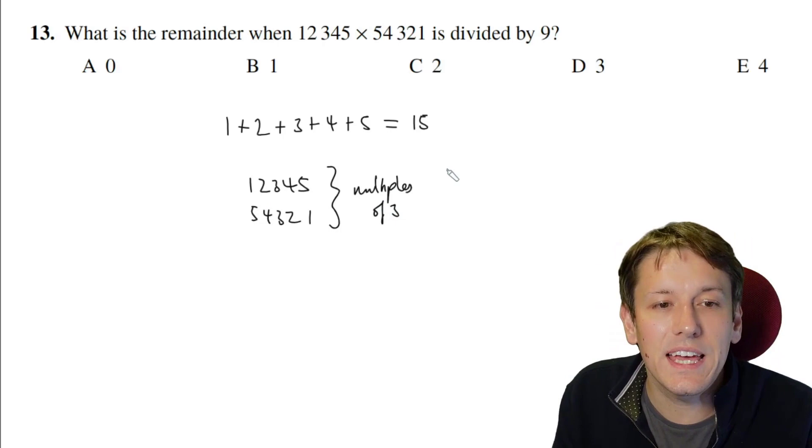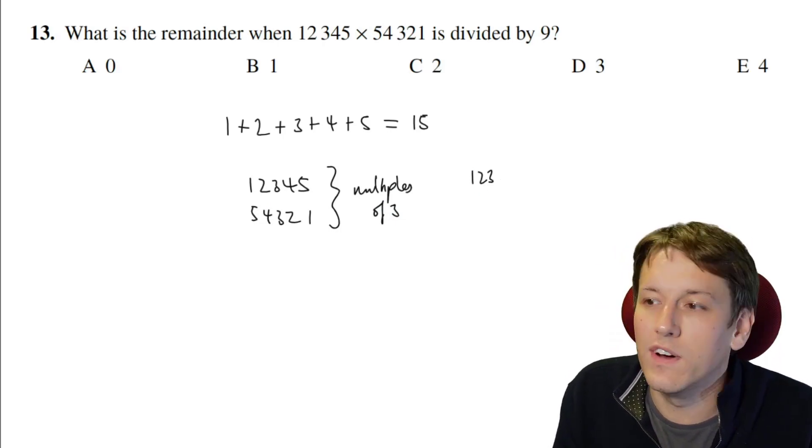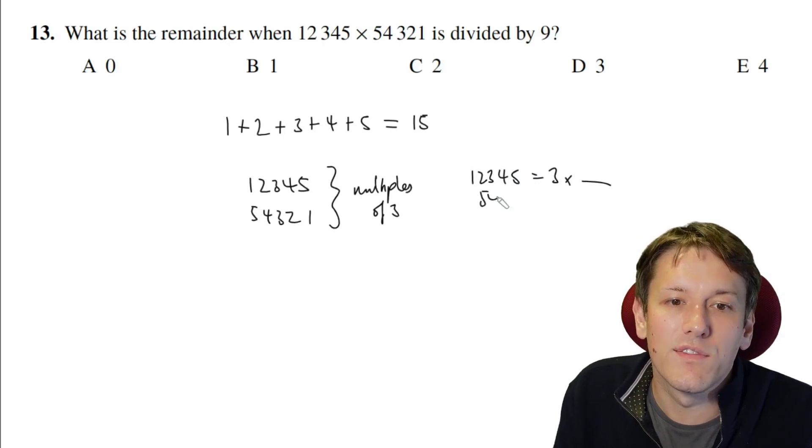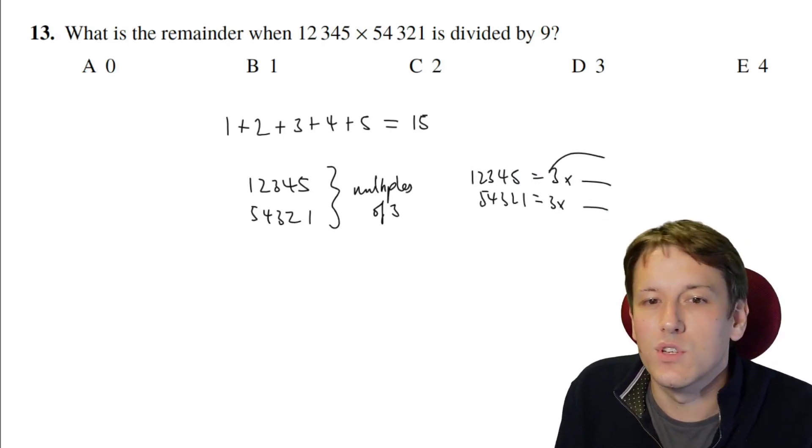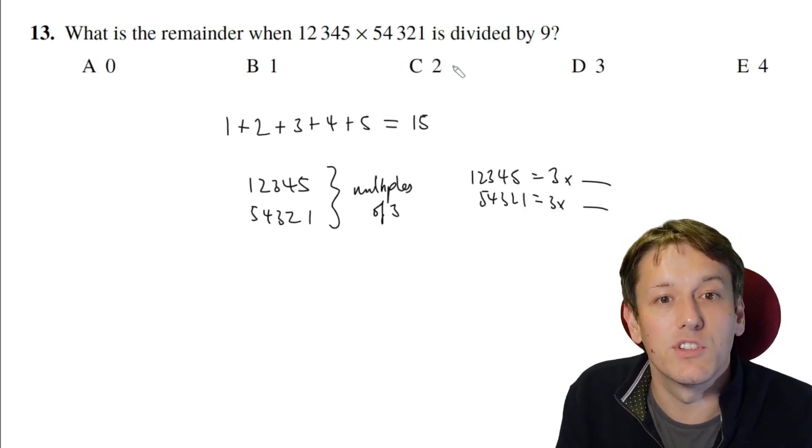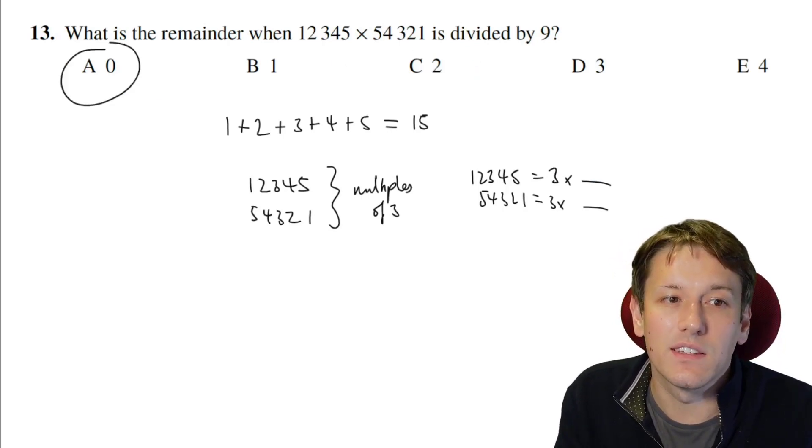So when I multiply them together, 12345 is going to be 3 times something, and 54321 is going to be 3 times something. So if I do this times this, it's going to have a 3 times 3 in it, so it's going to be a multiple of 9. That means the remainder when you divide by 9 is going to be 0.